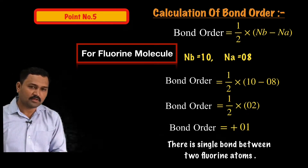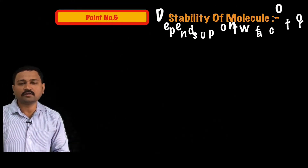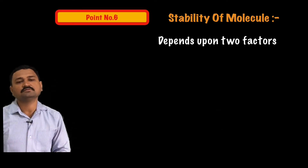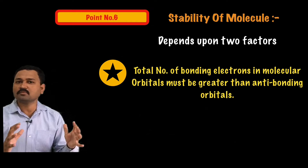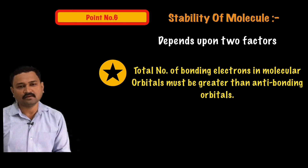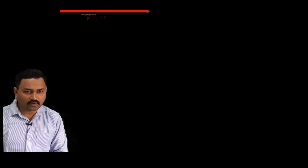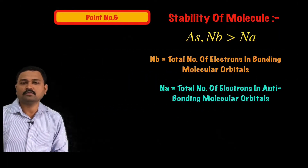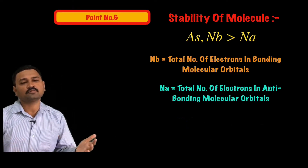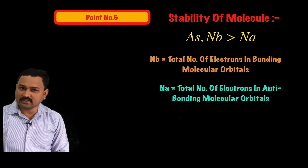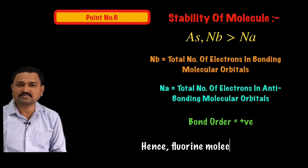Point number six: the stability of the molecule. Stability depends on two factors: the total number of bonding electrons must be greater than the total number of antibonding electrons, and the bond order must be positive. For fluorine, Nb = 10 is greater than Na = 8, so Nb > Na, and the bond order is positive (+1). Therefore, the fluorine molecule is stable.